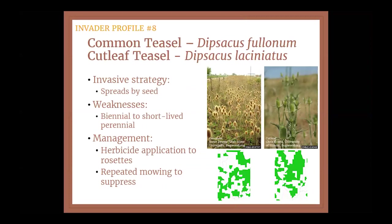Our two teasels are next — we have common and cut-leaf. They're able to spread by seed and are a biennial to a short-lived perennial, meaning they do have a basal rosette that is there for one year — sometimes more — before the plant bolts and sets seed. So again, that's the life stage we want to target. We can use herbicide to apply to those rosettes in either spring or fall. If you're looking to just suppress it, you can use repeated mowing — just make sure you're not mowing once the plant has set seed, because then you're acting as a vector to spread it. The difference in identifying common versus cut-leaf teasel comes down to comparing their leaves.